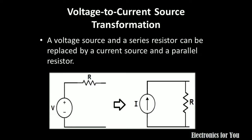The second transformation: a voltage source and a series resistance can be replaced by a current source and a parallel resistance. As you can see in this diagram, the voltage source and its series resistance is replaced by a current source and a parallel resistance. The value of current is given by I equals V divided by R, where V is the source voltage and R is the series resistance.